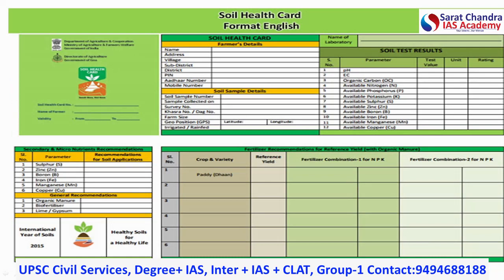The Soil Health Card tests 12 parameters: pH, electrical conductivity, organic carbon, nitrogen, phosphorus, potassium, sulfur, zinc, boron, iron, manganese, and copper. From a prelims point of view, this is important — just as in the 2018 prelims a question asked which crop doesn't have MSP, similarly we can expect a question asking which parameter is not mentioned under the Soil Health Card. So just revise these 12 parameters and you will be able to eliminate wrong answers.